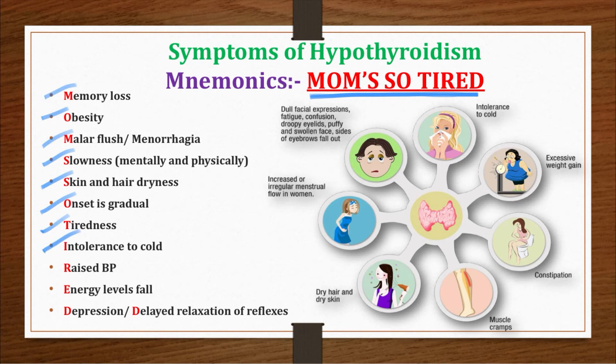T stands for tightness. I stands for intolerance to cold. R stands for raised BP, blood pressure. E stands for energy levels fall. D stands for depression and delayed relaxation of reflexes.